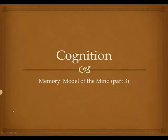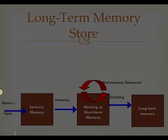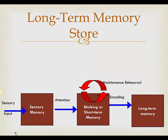We're now going to start talking about memory and the final pieces of the model of the mind. The first piece we're going to talk about is the long-term memory storage. This is our final box along our three-box continuum.